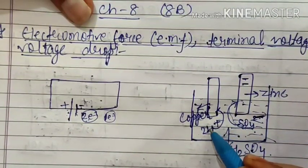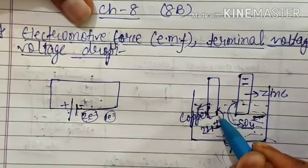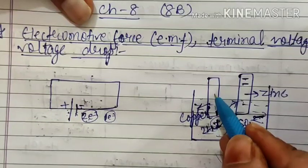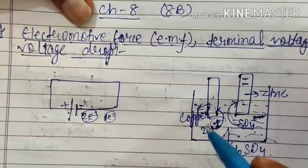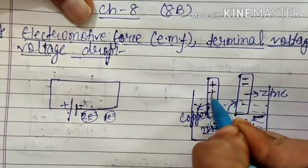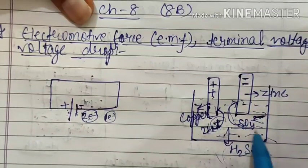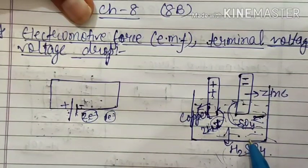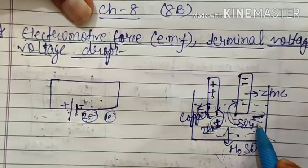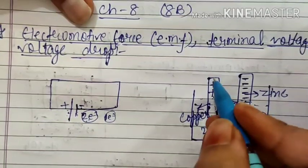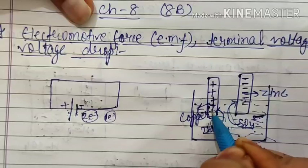Similarly, when hydrogen ions go to the copper plate, they carry a positive charge and try to neutralize it by taking electrons from the copper plate. The atoms that donate electrons acquire a positive charge. Continuously, many H₂SO₄ molecules dissociate into H⁺ and SO₄²⁻, so SO₄²⁻ continuously deposits negative charge on the zinc plate and hydrogen continuously deposits positive charge on the copper plate.